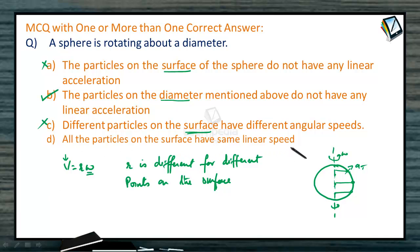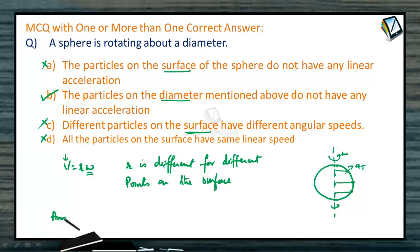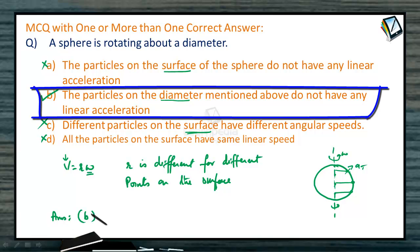All the particles on the surface do not have the same linear speed — they have different linear speeds but the same angular speed. So this option is also wrong. The answer is only option B.